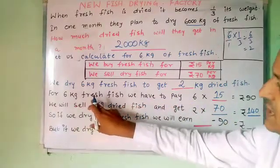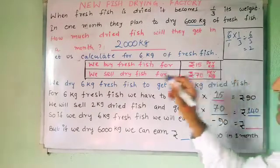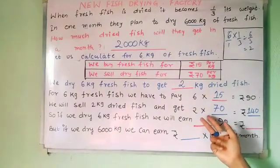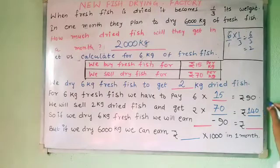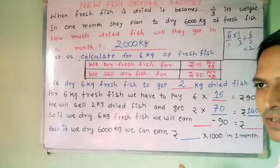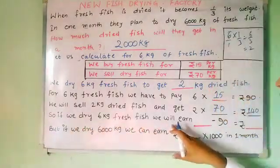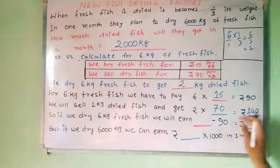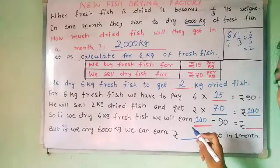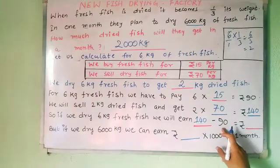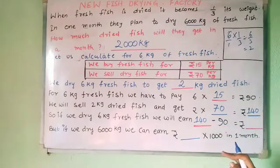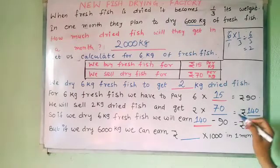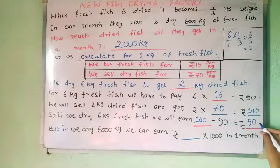Now when you take 6 kg fresh fish, you are spending 90 rupees. The same 6 kg fresh fish after drying becomes 2 kg dried fish, and that 2 kg dried fish sells for 140 rupees in the market. So which is more — 90 or 140? Obviously 140 is more. When we dry and sell it, we get more. The total money you get is 140 rupees, but out of that you have already spent 90 rupees buying fresh fish, so you subtract that: 140 minus 90 is rupees 50.